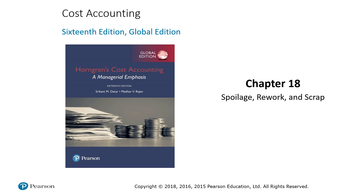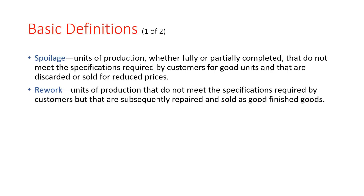Chapter 18: Spoilage, Rework, and Scrap. First of all, you have to differentiate among spoilage, rework, and scrap. Spoilage are units of production — whether fully or partially completed — that do not meet the specifications required by customers for good units, and that are discarded or sold for reduced prices.